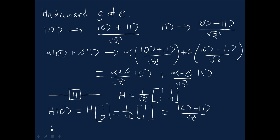And similarly, if we take this matrix and act it on the one state, it's H times this column vector, which is just the second column, 1/√2 [1, -1], which is (|0⟩ - |1⟩)/√2.